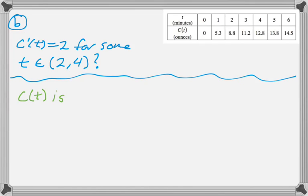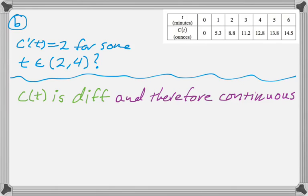Well, it turns out we're told that C of T is differentiable. And if C of T is differentiable, it's definitely continuous. So we have a function that's continuous and differentiable, which means the mean value theorem applies.